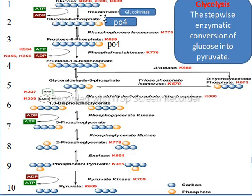Then in the next step, isomerization will occur. In this step glucose is converted into its isomer fructose. So glucose-6-phosphate is converted into fructose-6-phosphate by an enzyme called phosphoglucose isomerase.